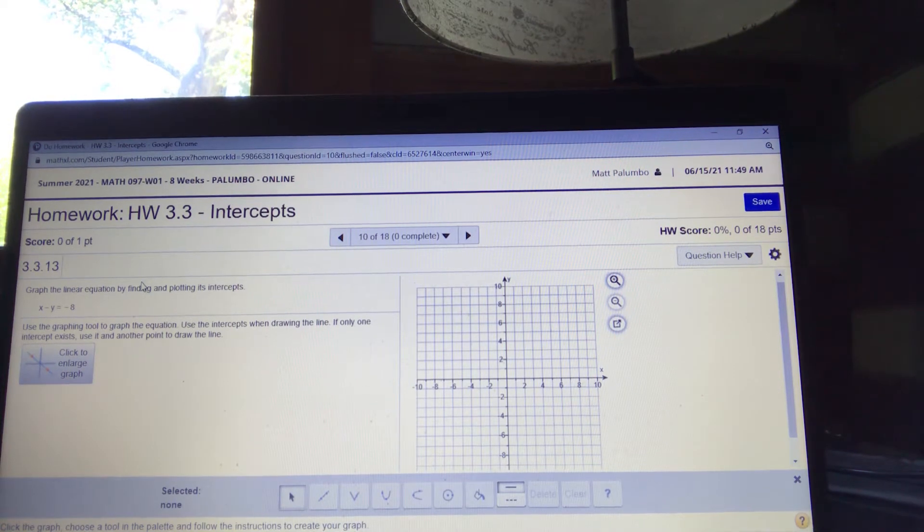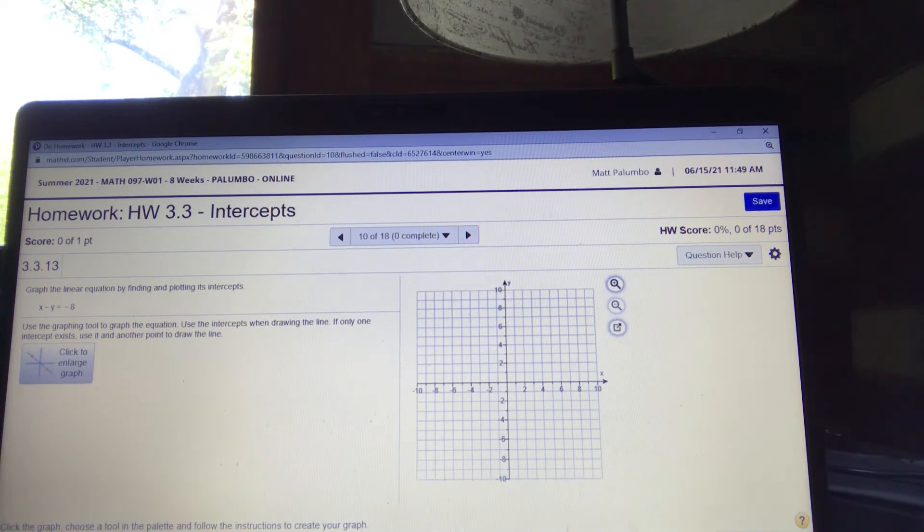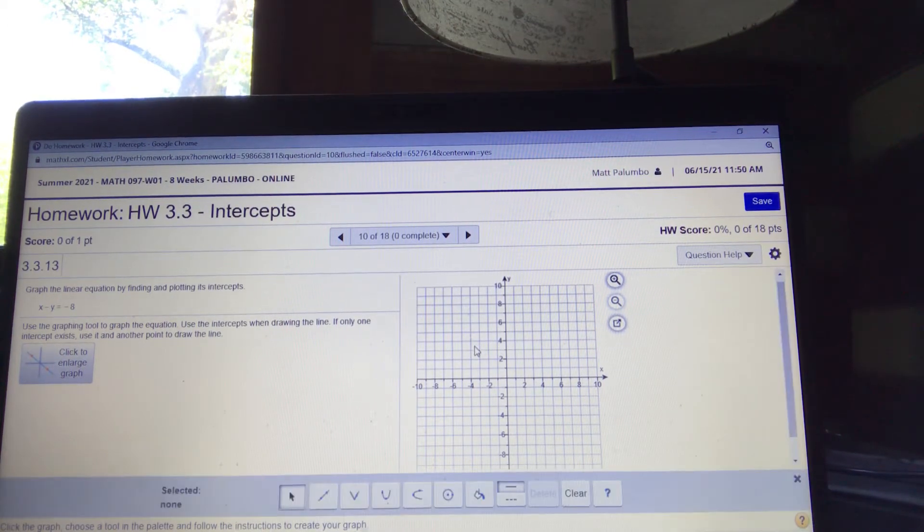Without showing the work of how to do it, I'm going to tell you that the points are 0, 8, negative 8, 0, and 2, 10. Now, you're not going to have that bar down there at the bottom. It's going to be blank like this. But as soon as you click on the graph, that bar is going to pop up. Okay, you ready? Three, two, one.